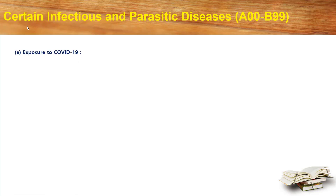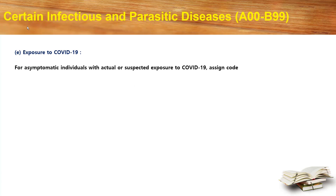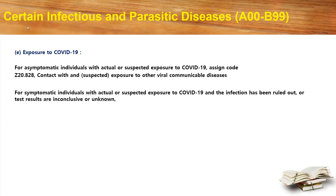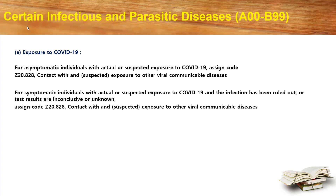Let's move into exposure to COVID-19. For asymptomatic individuals with actual or suspected exposure to COVID-19, assign code Z20.828, that is contact with and suspected exposure to other viral communicable diseases. For symptomatic individuals with actual or suspected exposure to COVID-19 where the infection has been ruled out or test results are inconclusive or unknown, also assign code Z20.828, contact with and suspected exposure to other viral communicable diseases.